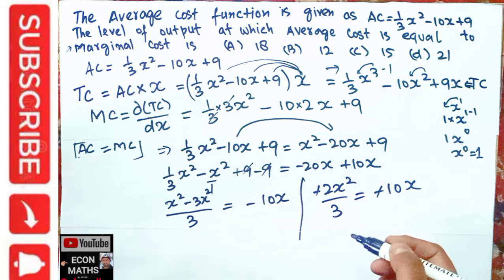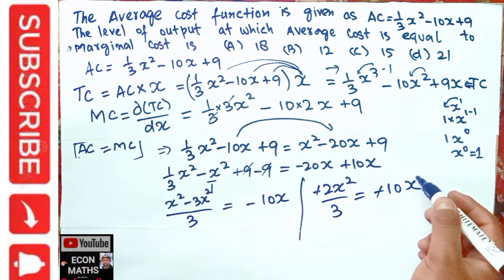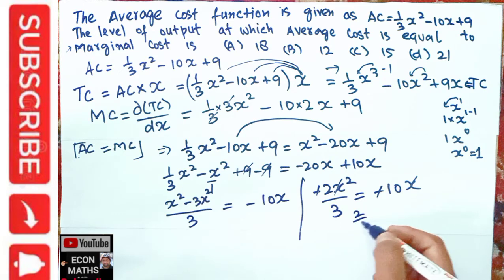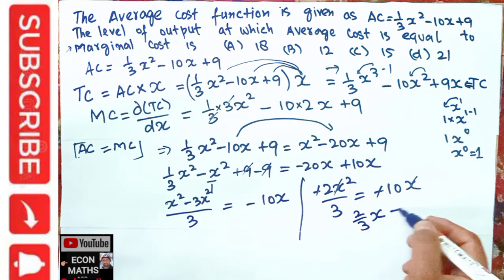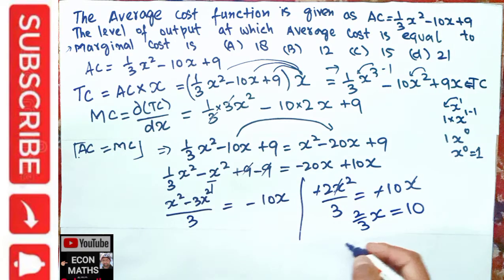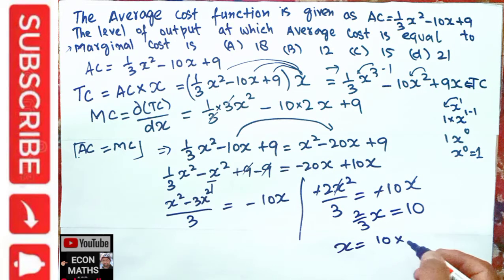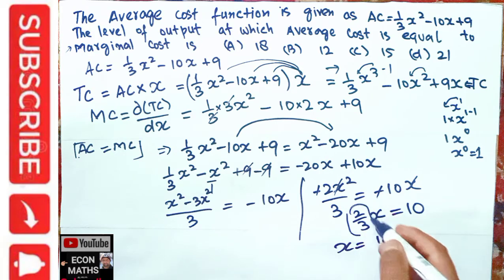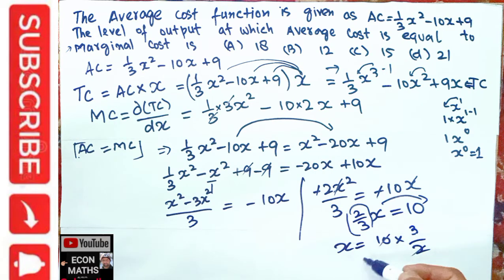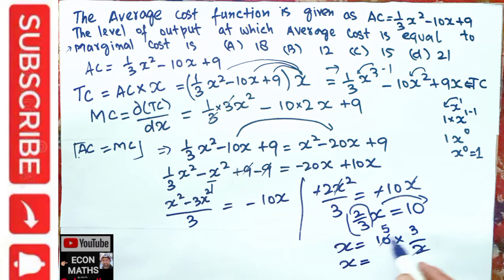We have 2x²/3 = 10x. Cancelling x from both sides gives 2x/3 = 10. Transposing 2/3 to the right-hand side — it gets reciprocated to 3/2 — so x = 10 × (3/2) = 15.